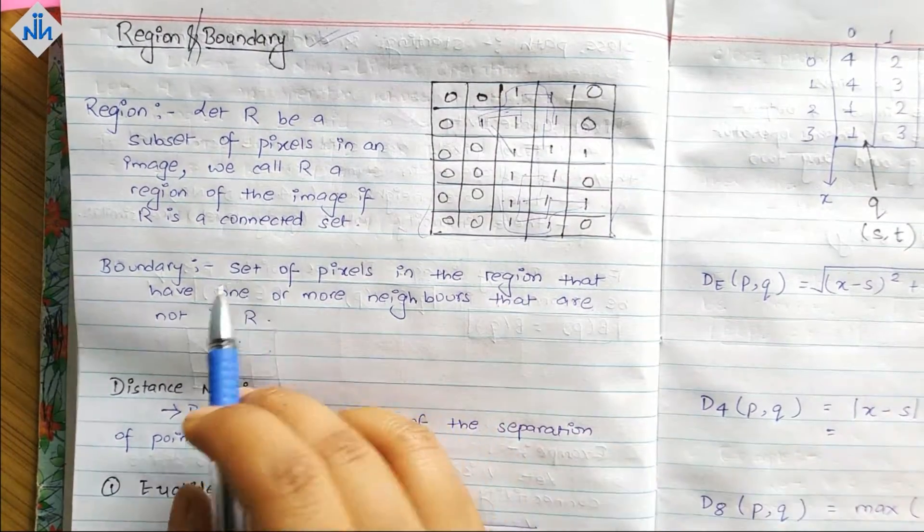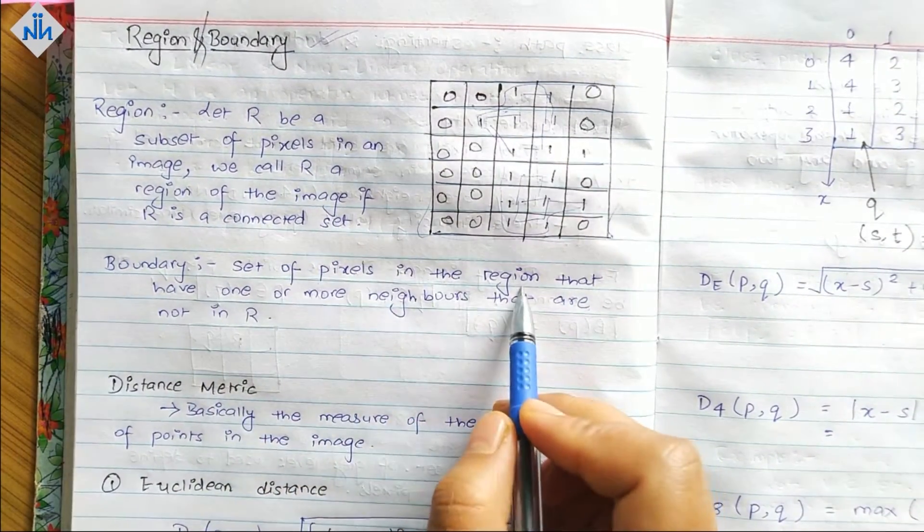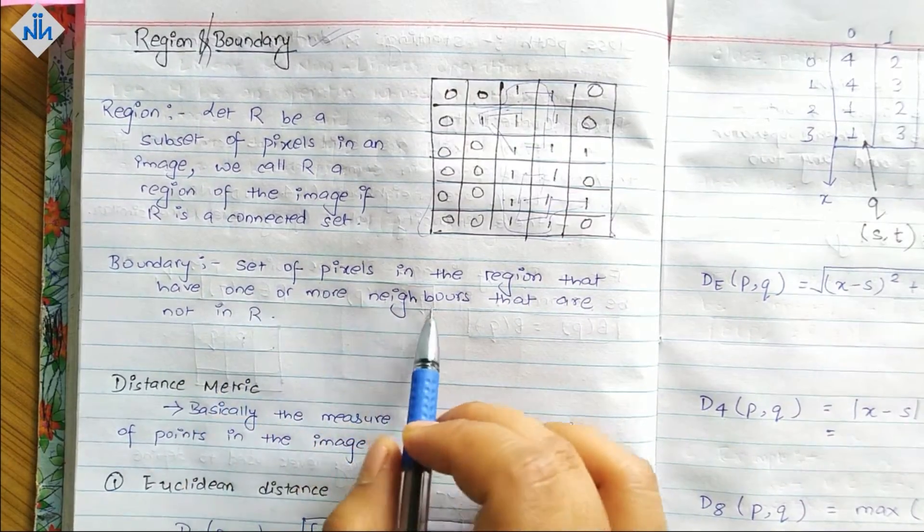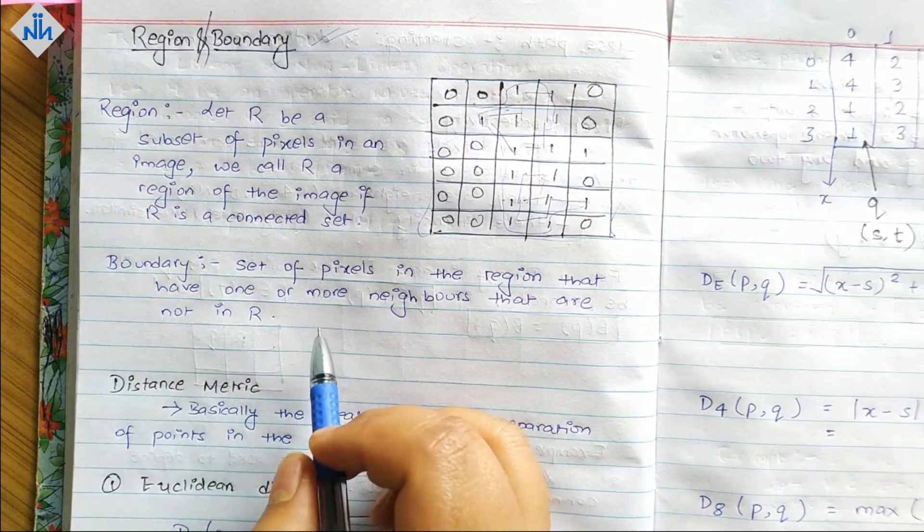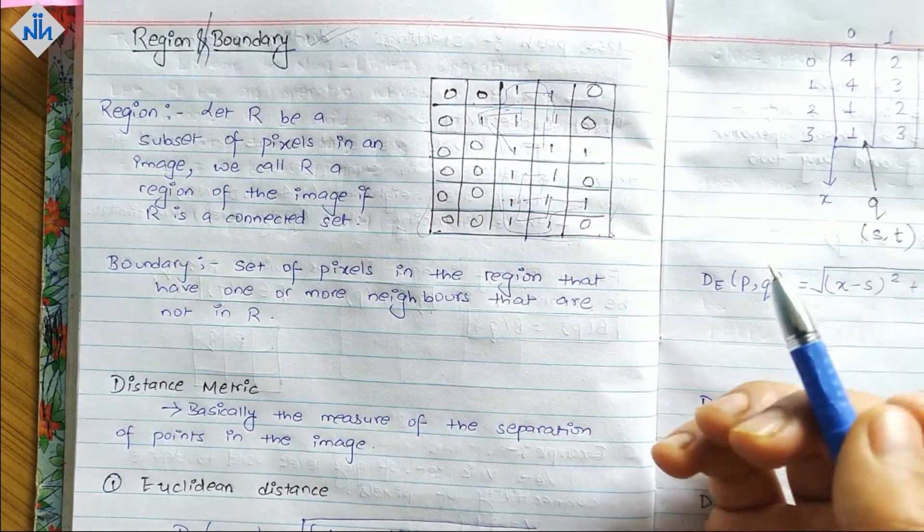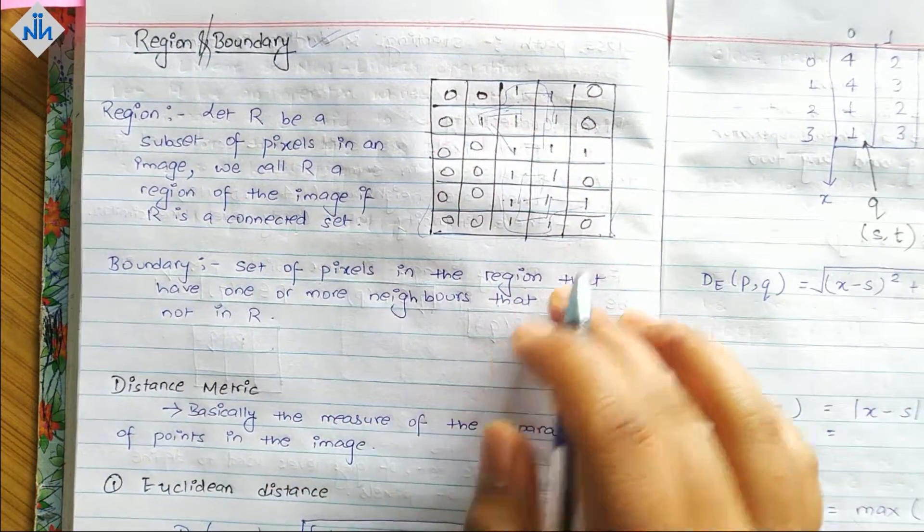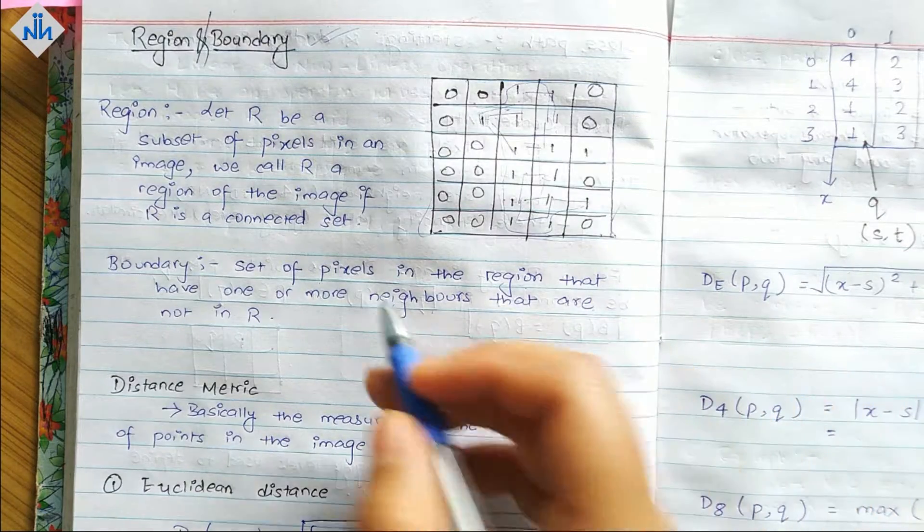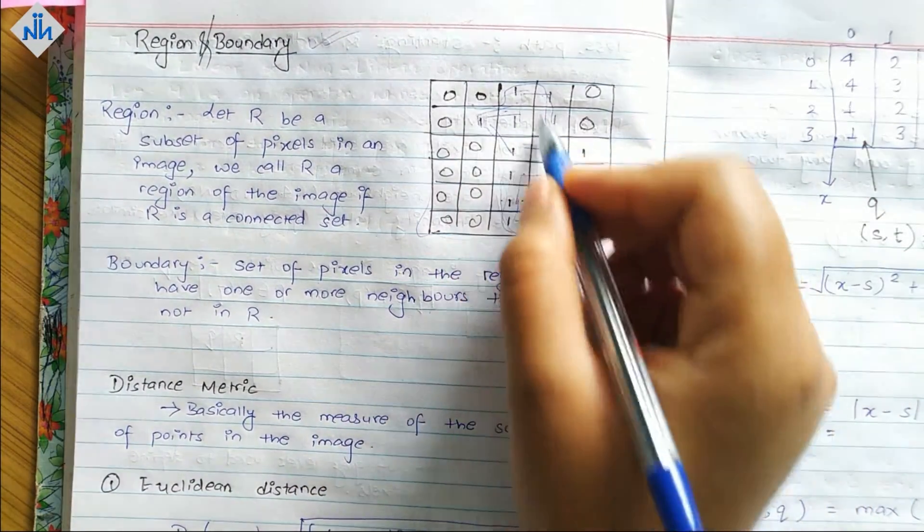A boundary is a set of pixels in a region that have one or more neighbors that are not in R. So it is a set of pixels from the region that have one or more neighbors that are not in R.